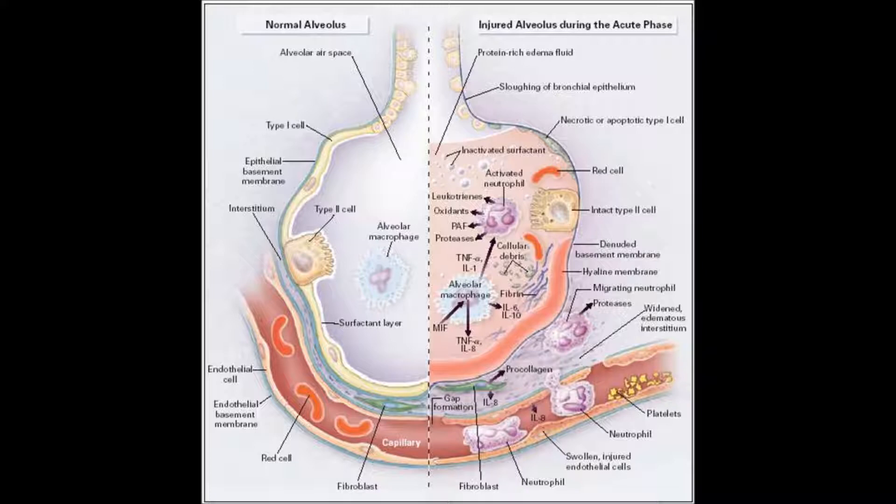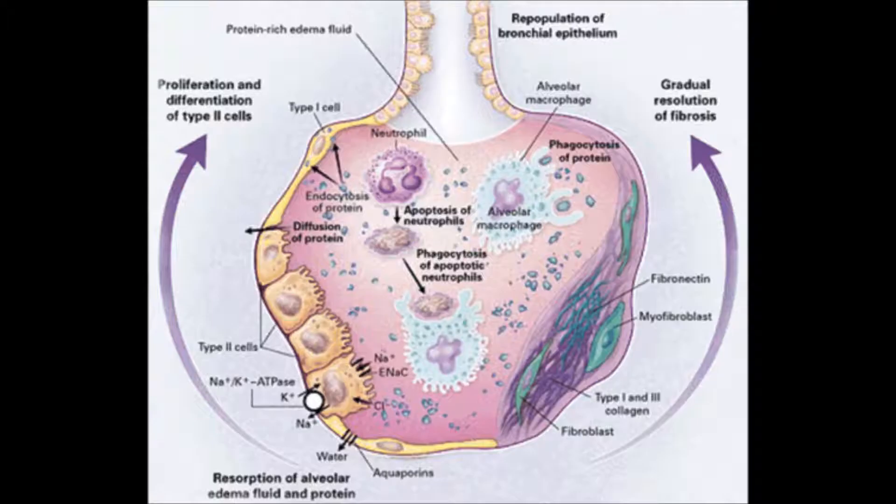The answer is C. The patient who has aspirated gastric content might go into shock from aspirating acidic contents. There is no relationship of ARDS to chest tubes, open heart surgery, or MVAs unless the patient's situation is complicated by shock.